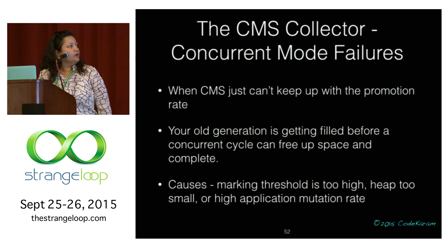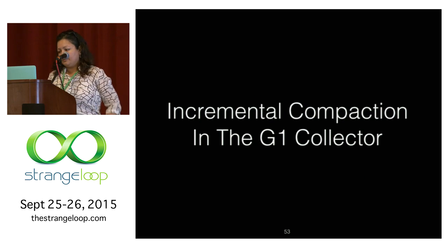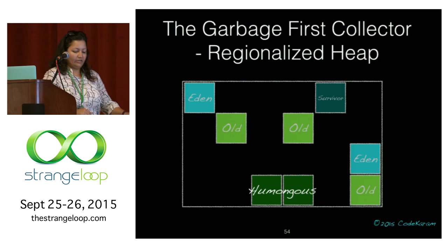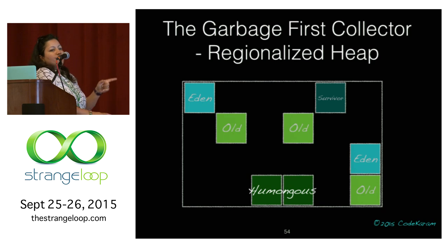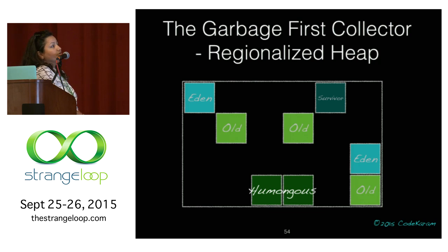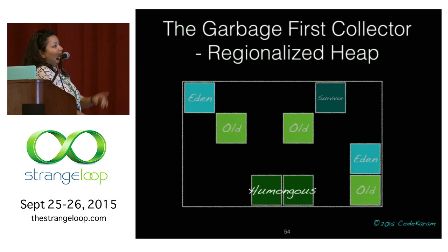Now let's move on to G1 — specifically incremental compaction in G1. First, the G1 heap is made out of similar-sized regions. The entire heap is contiguous, but the generations in G1 — young and old — are not contiguous, so an Eden region doesn't have to be next to another. Except for humongous regions, which I'll come back to later.